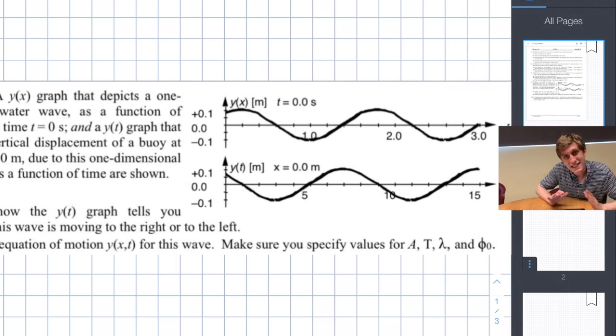However, based on this graph we see that that is not the case. The buoy immediately starts traveling downwards as soon as time passes. This tells us that this wave has to be moving to the right.